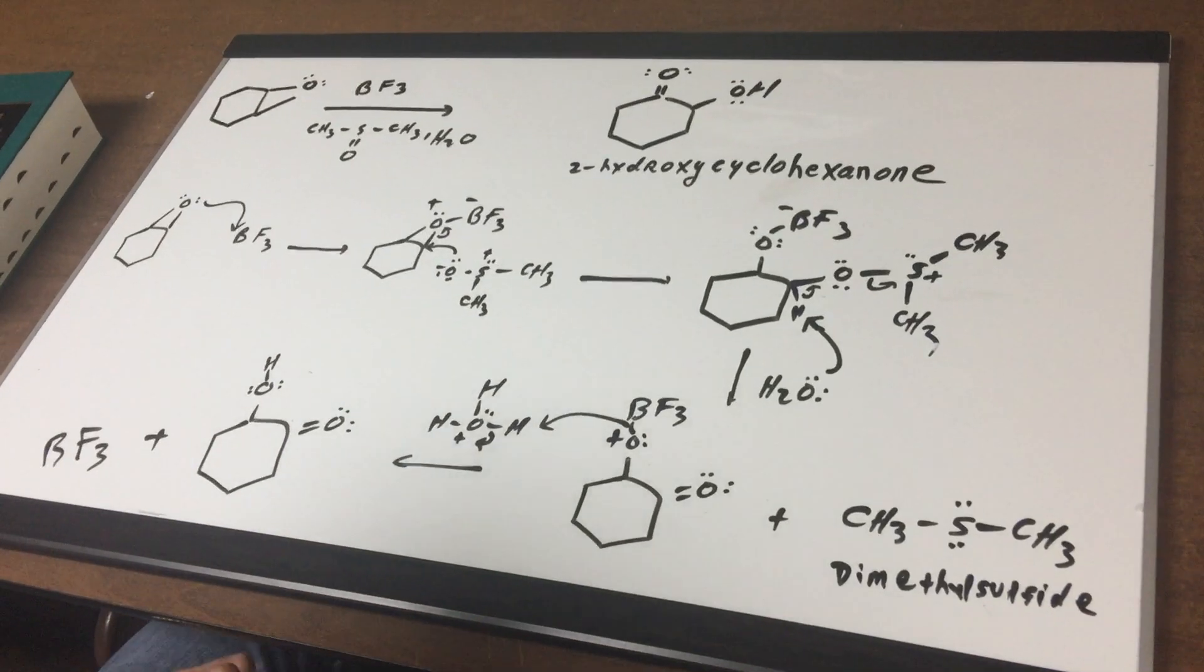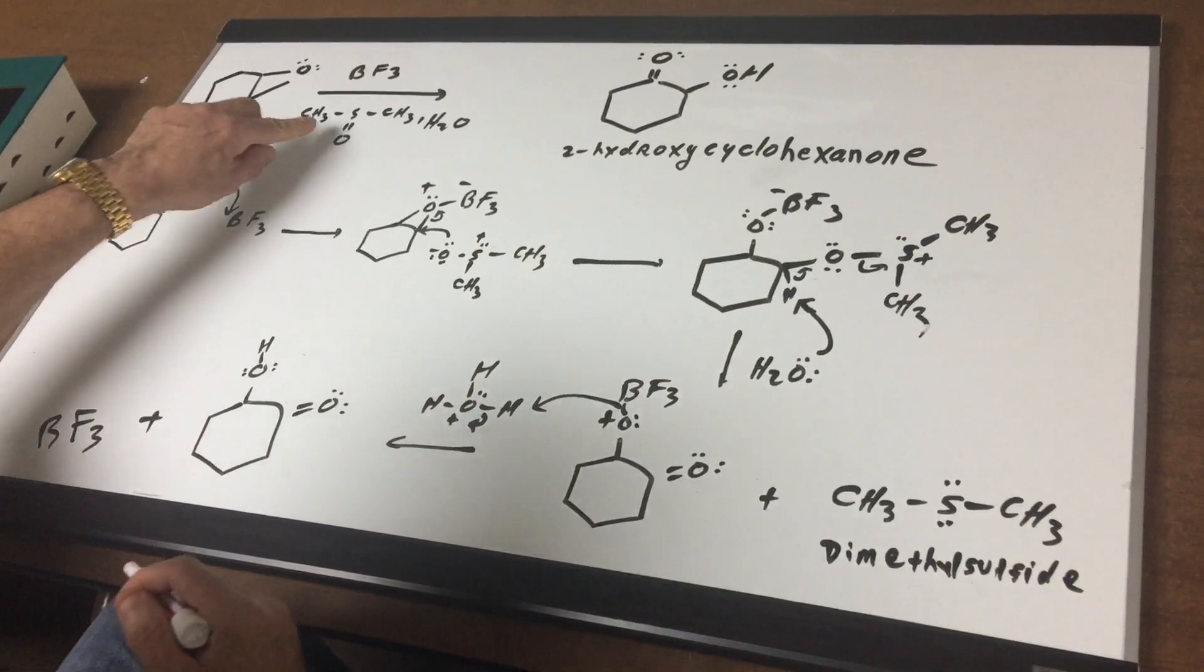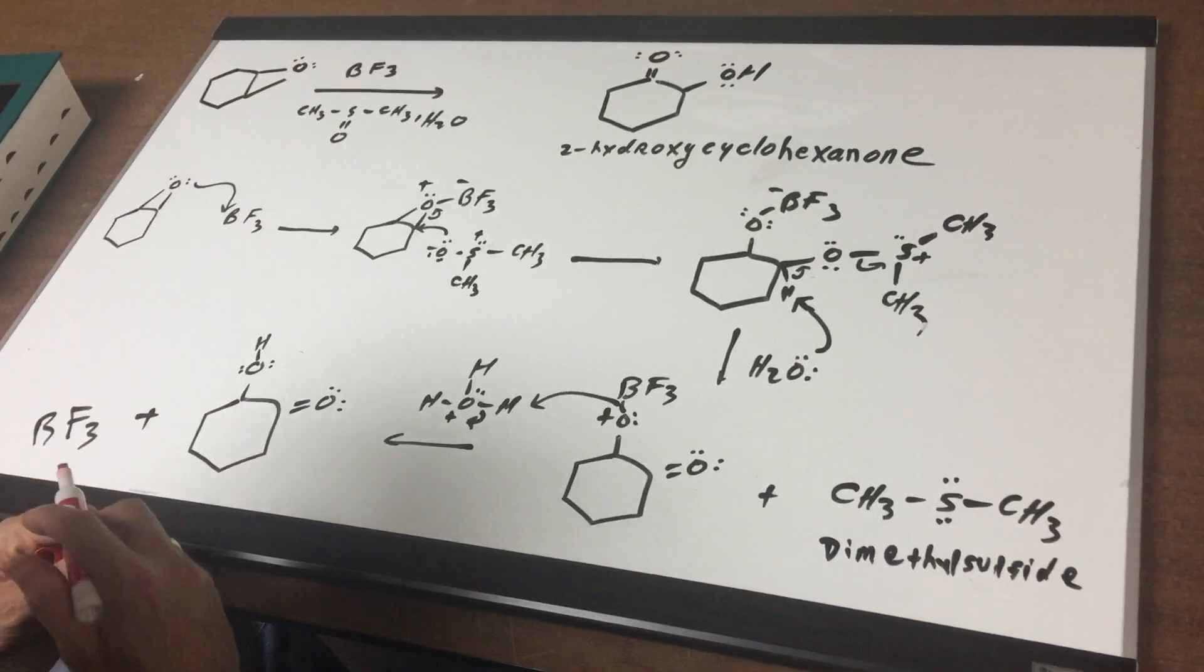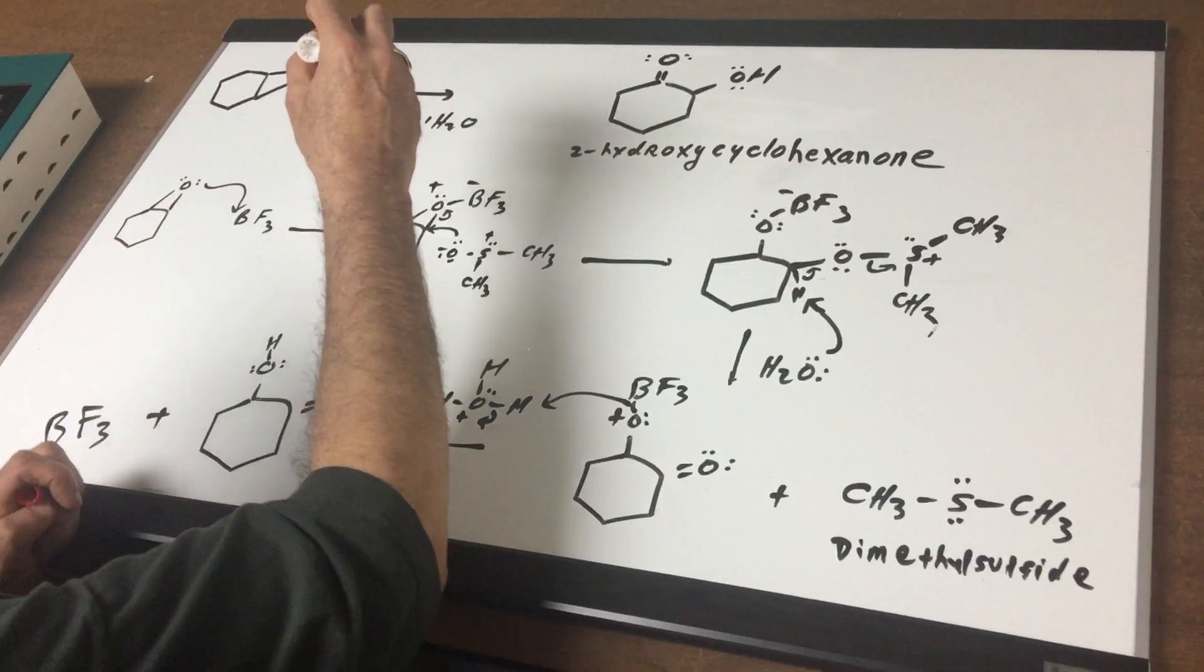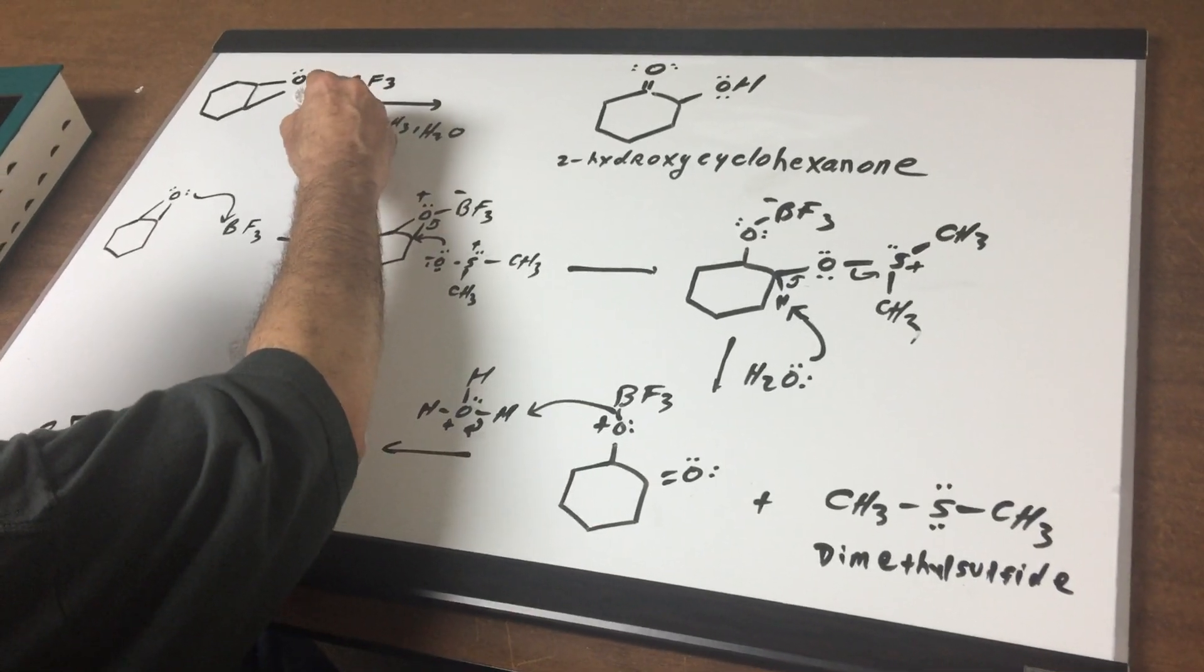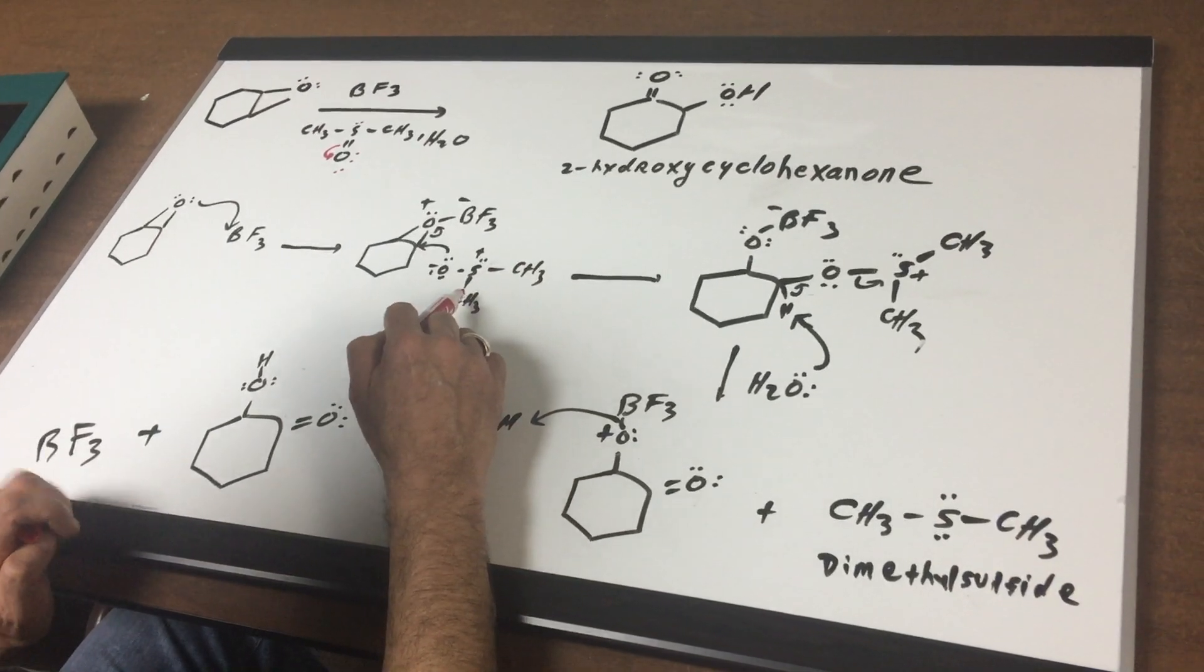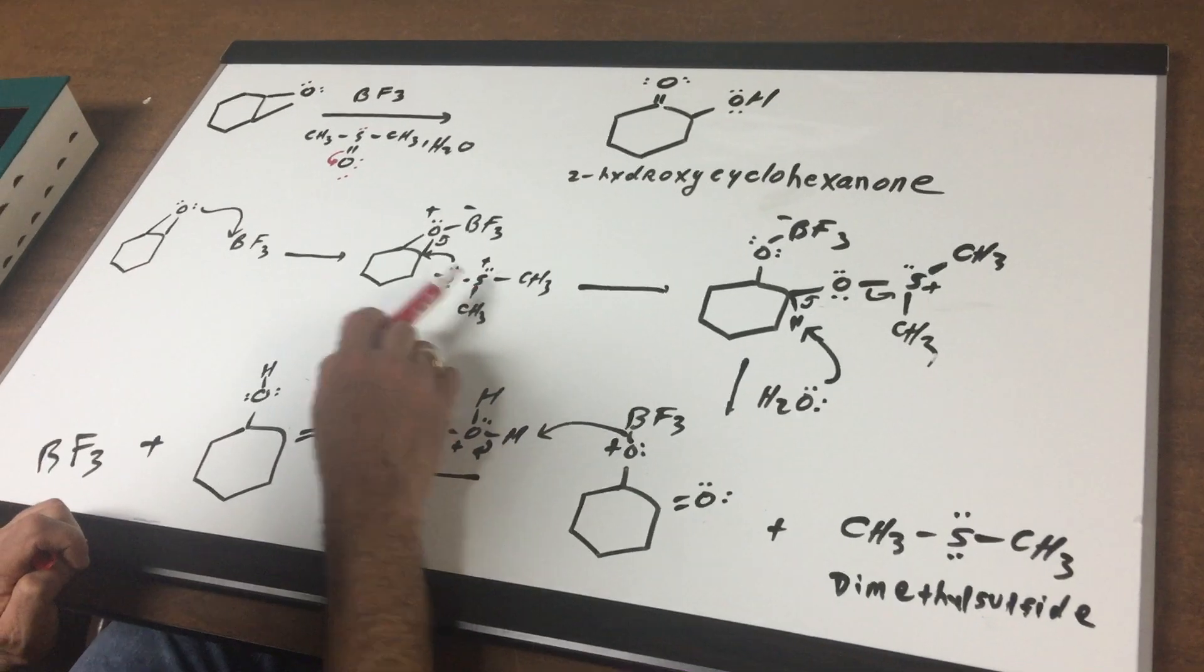Once I protonated it, the trick that I like to use is when you have DMSO, which is this compound, if you draw the resonance form of this. In actuality, there's two dots up here that sometimes we don't put in. As you can see, I'm going to move these electrons out, and that would give this as a resonance form. I think it's easier to see it if you use this resonance form.